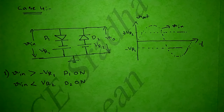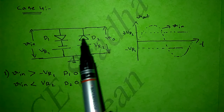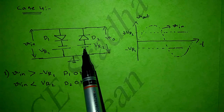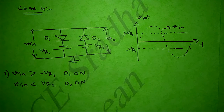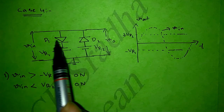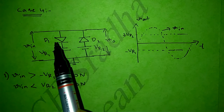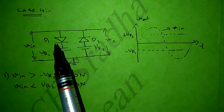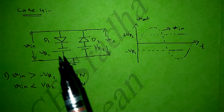So in two-level clippers, we should not connect a negative reference voltage to diode D1 and a positive reference voltage to diode D2. In this manner we can analyze two-level clippers. We can also alter the positions of diodes — keeping both D1 and D2 in the downward or upward direction — to get different types of two-level clippers. Please try those circuits and if you have any doubts, mention them in the comment section. Thank you.